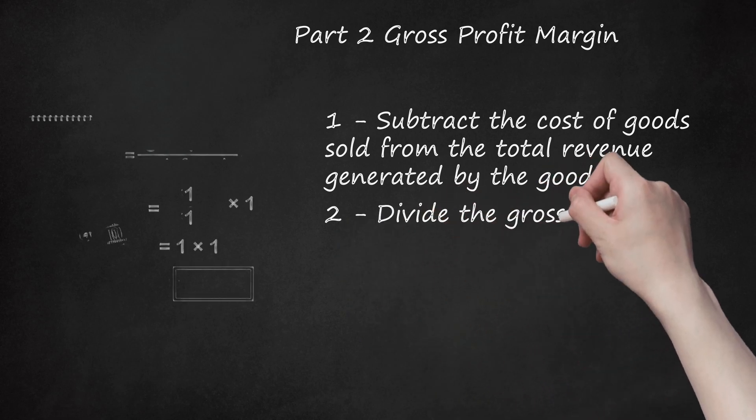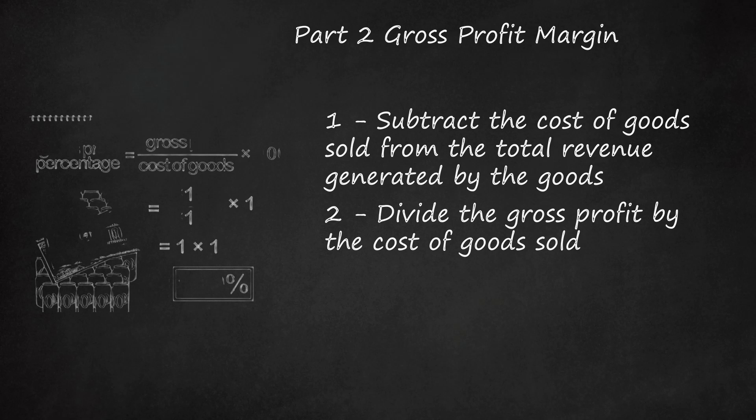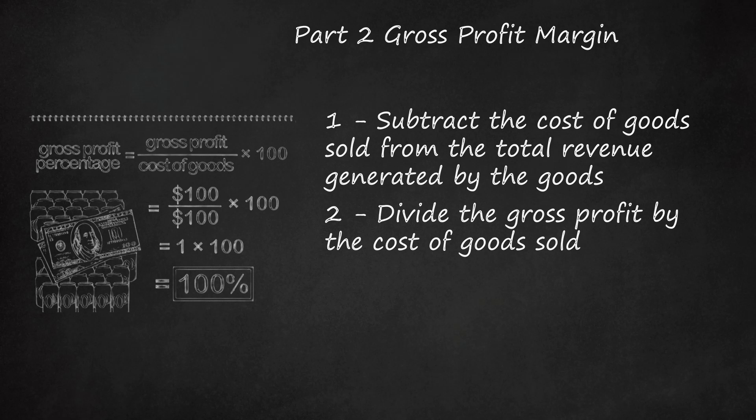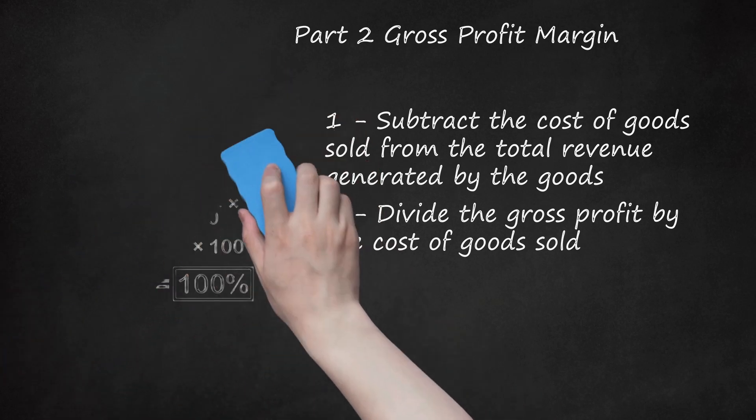Step 2: Divide the gross profit by the cost of goods sold. Multiply the number by 100 to get a percentage, rather than a decimal. For example, divide $100 by $100 and the figure is 1. If you multiply it by 100, you get a gross profit percentage of 100%.